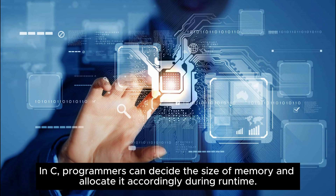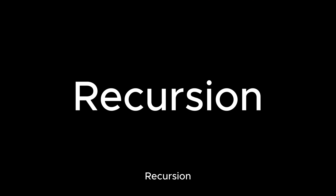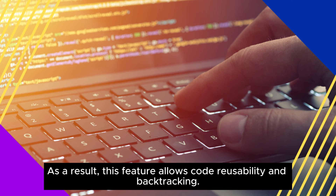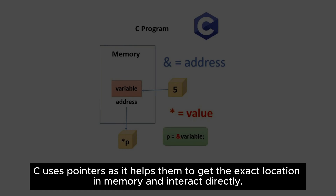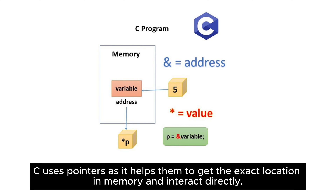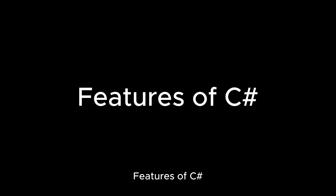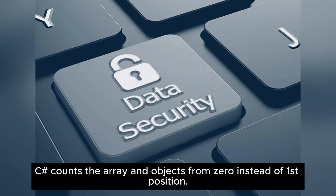Dynamic memory management — in C, programmers can decide the size of memory and allocate it accordingly during runtime. Recursion is a function that can call itself until it is true; as a result, this feature allows code reusability and backtracking. Pointers — C uses pointers to get the exact location in memory and interact directly; through pointers, programmers can operate easily with arrays, functions, structures, and memory.